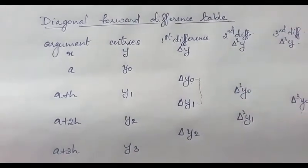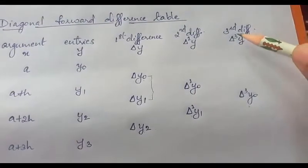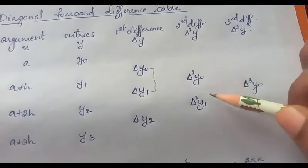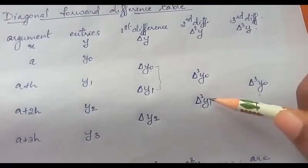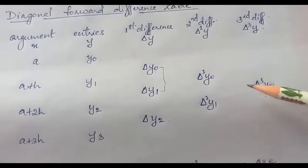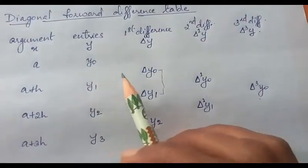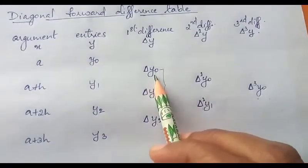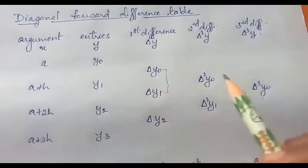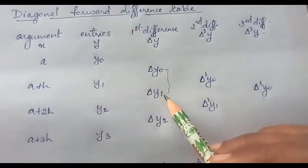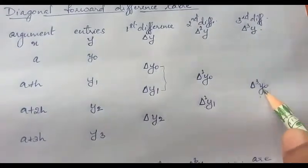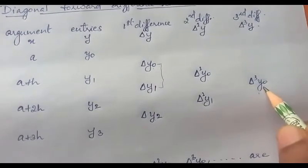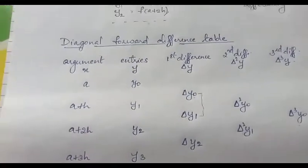Similarly, you can find the next higher order differences. The third forward difference, generally represented by delta cube y, is the difference between the second differences. So the third difference is delta squared y1 minus delta squared y0 is equal to delta cube y0. You should note that the lowest suffix is given along with the difference notations — for example, delta squared y0 means delta y1 minus delta y0, and delta cube y0 is delta squared y1 minus delta squared y0. This table is called the diagonal forward difference table.